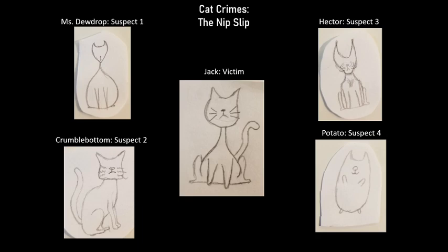Somewhere in the chaos of enjoying their catnip, one of the other cats slipped away with some of Jack's catnip. Jack claims to have seen Potato slip a paw into his nip pile, but eyewitness testimony is known to be too fallible to trust as primary evidence.